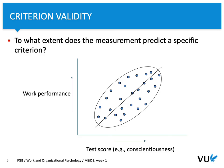You probably remember this graph from the previous week. It describes a situation where we try to predict work performance or job performance based on a specific test score. We measure it and then check the level of job performance — so we try to make a prediction based on test score. For example, if we take into account conscientiousness, one of the most prominent personality measures in the work context, we would expect that the higher the conscientiousness, the higher the work performance.